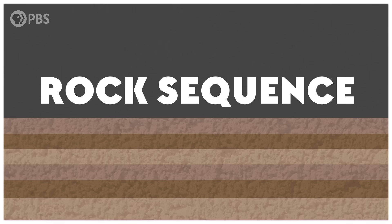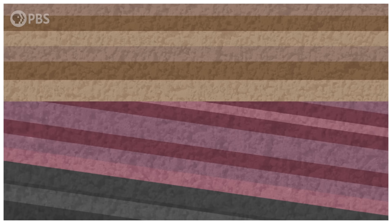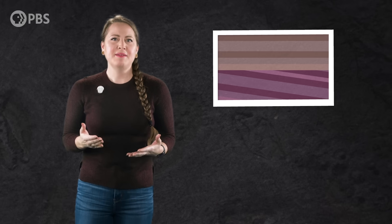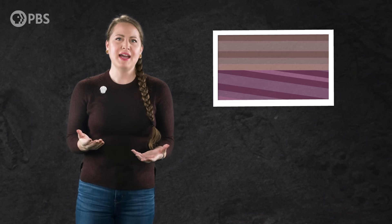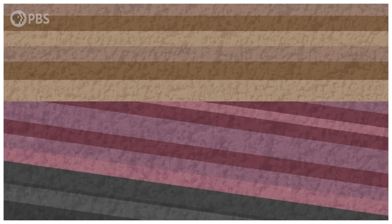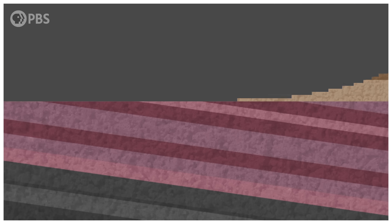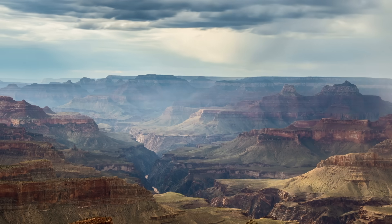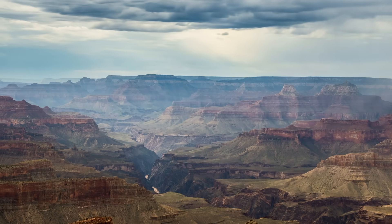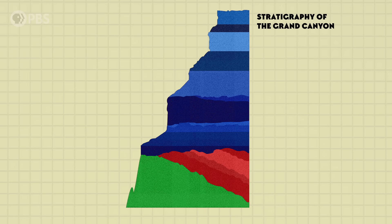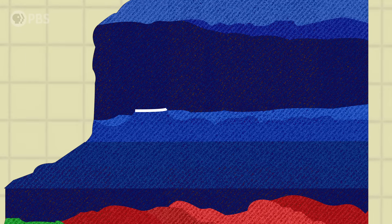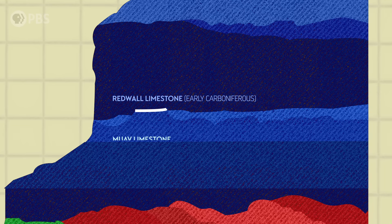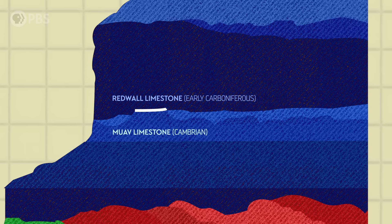An unconformity is a boundary dividing two strata with an age difference between them. An unconformity might mean that no new material was deposited at a place for a long time, interrupting the rock sequence. But usually, unconformities are made when an entire layer gets eroded away. The Grand Canyon's picturesque walls are full of unconformities — for example, there's a 150 million year gap between two strata of limestone, a layer from the early Carboniferous period and another from the Cambrian period.